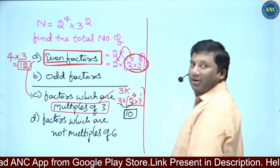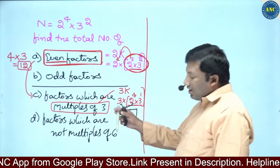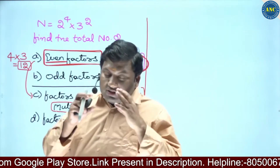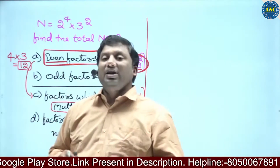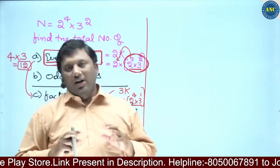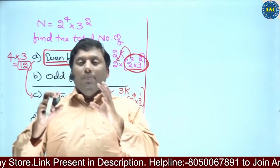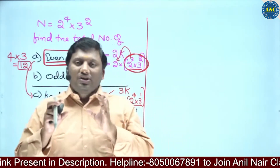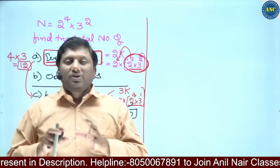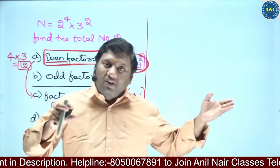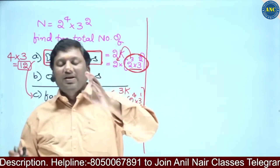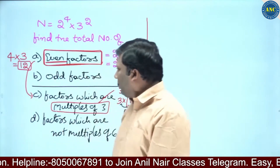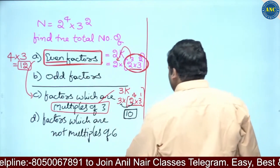Are you all with me? Factors which are multiples of 2 give an even number; factors which are multiples of 3 is 3 into some natural number; factors which are multiples of 5 is 5 into some natural number. For factors which are NOT multiples of 10, that means total factors minus factors which are multiples of 10 — we will use a negation approach.